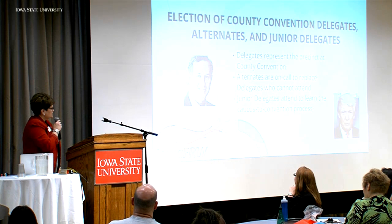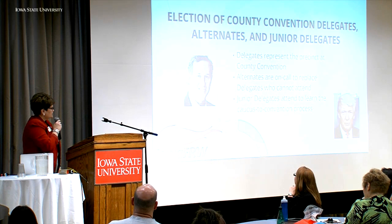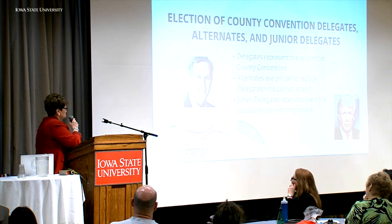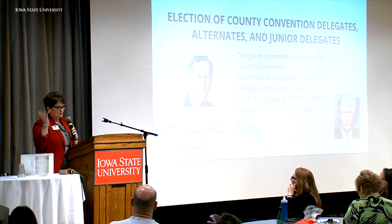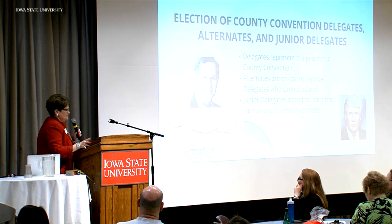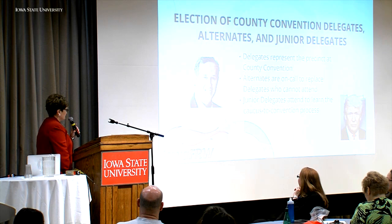Alternates are people on call to replace delegates if they're not able to fulfill their responsibility — can't attend or have to leave early. Junior delegates attend more as a learning process. These are junior high and high school students who come, do their own platform building, and bring it back to the committee at the end of the day. One year they focused on hot lunches because they didn't like what they were being served at school. It's a great way to get them involved.